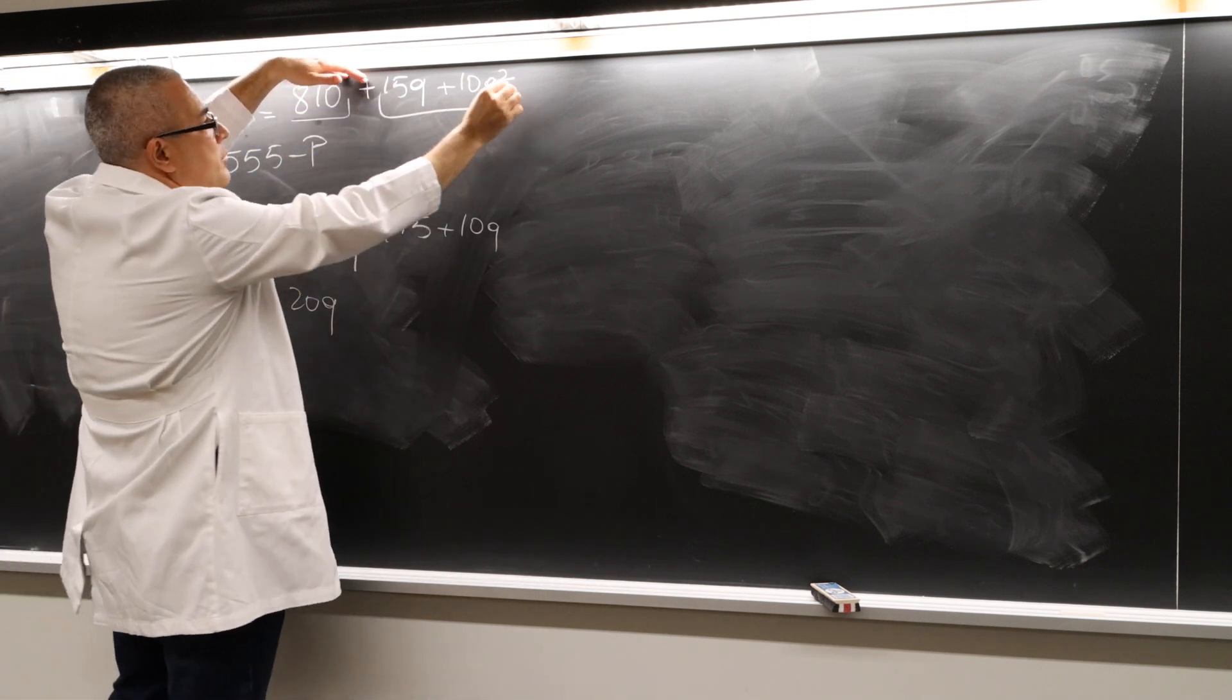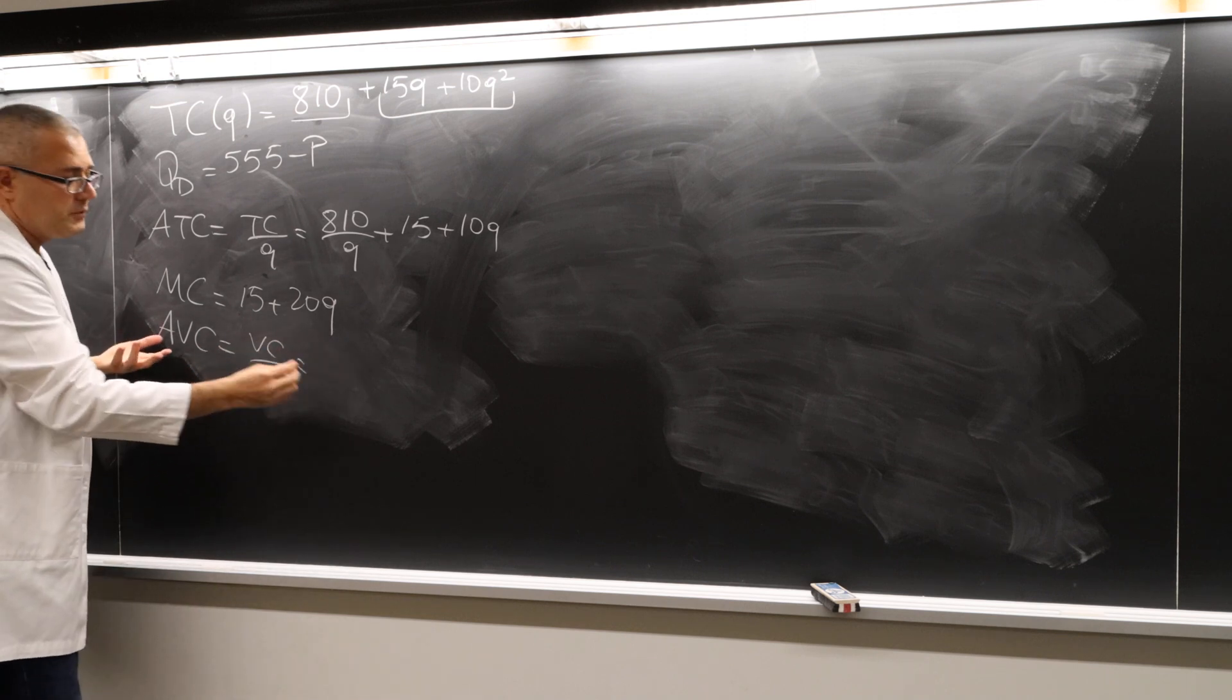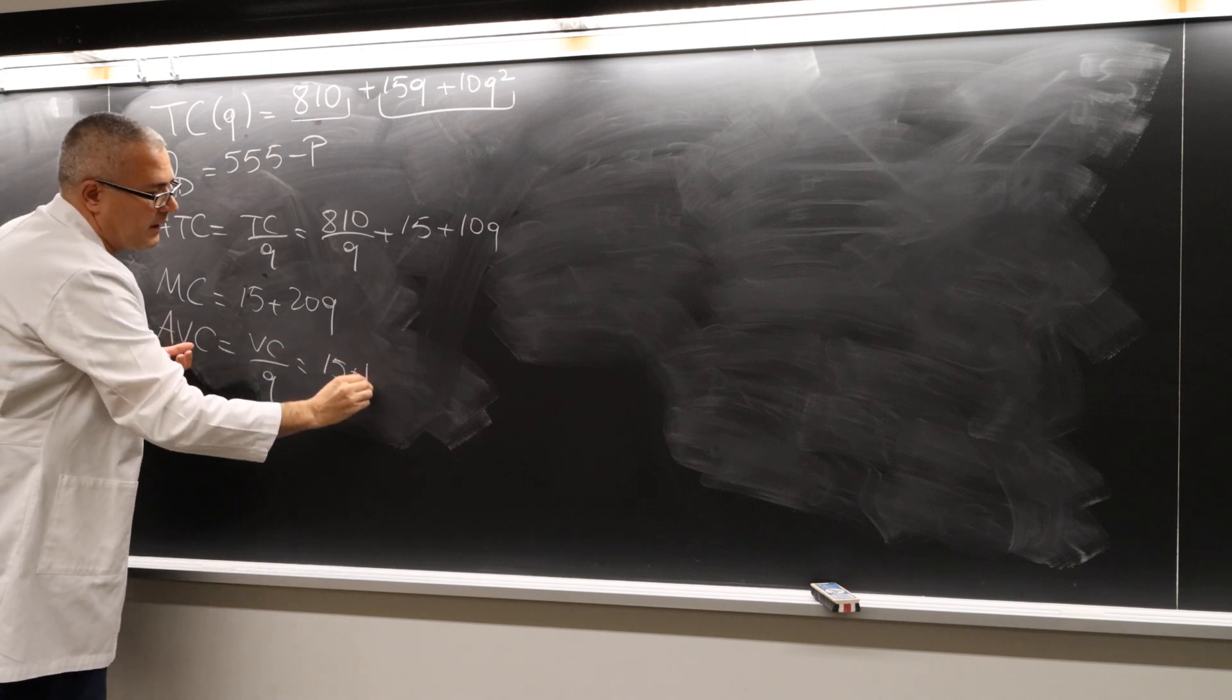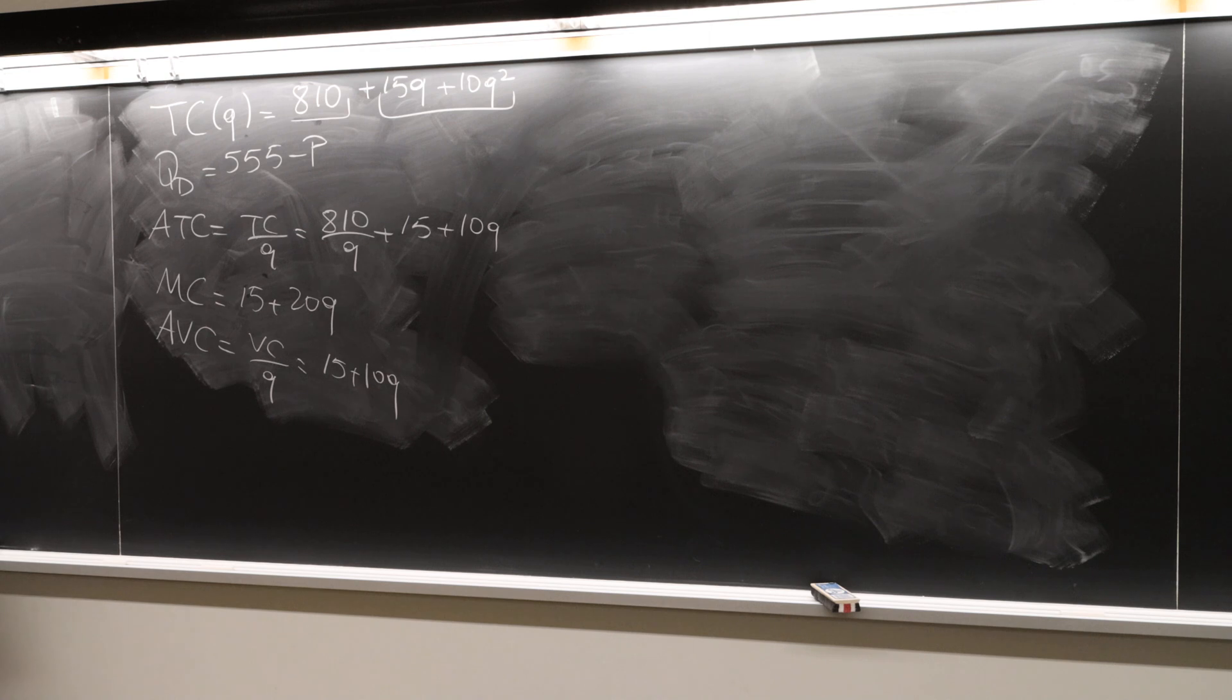This is the variable cost. So the average of it is the variable cost divided by q. So it's basically 15 plus 10q. And this is the average variable cost. Okay? So that's part A. Easy.